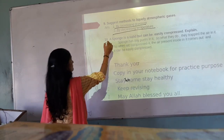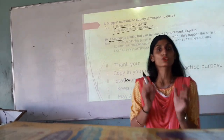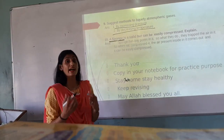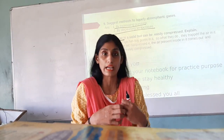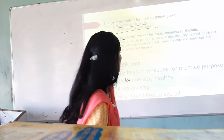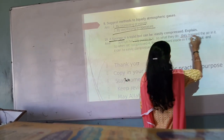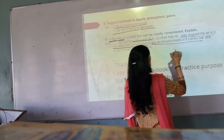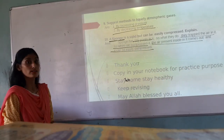Next question: sponge is a solid and yet it can be compressed. If you have ever seen a sponge, it has a lot of tiny pores. When you press it, the air goes out. The reason is that sponge has tiny pores that trap air from the atmosphere, and when you compress it, the air comes out from those tiny holes, making it easily compressible.